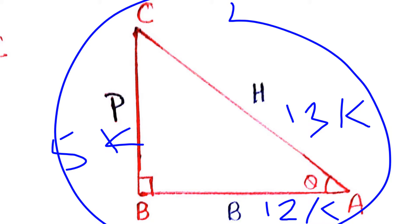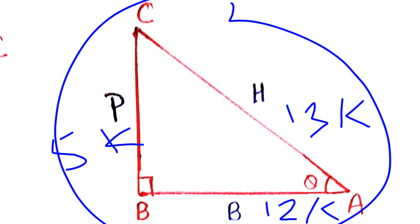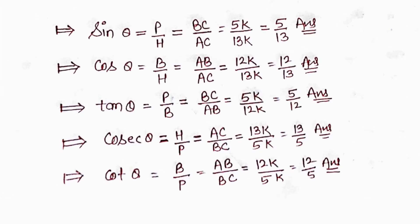Now let's find the trigonometric ratios. First, sin θ = P/H = perpendicular/hypotenuse = BC/AC = 5K/13K = 5/13.